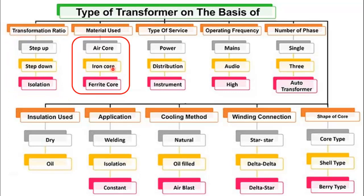Then, based on the type of material used between the two windings, we have the air core transformer, the iron core transformer, and the ferrite core transformer, which is used for high frequency applications.